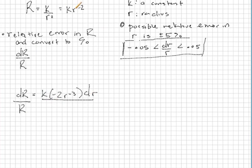I happen to know by the equation above that big R is equal to k little r to the negative 2. So instead of dividing this side by big R, I'm going to divide it by the equivalent expression for big R, so k r to the negative 2.